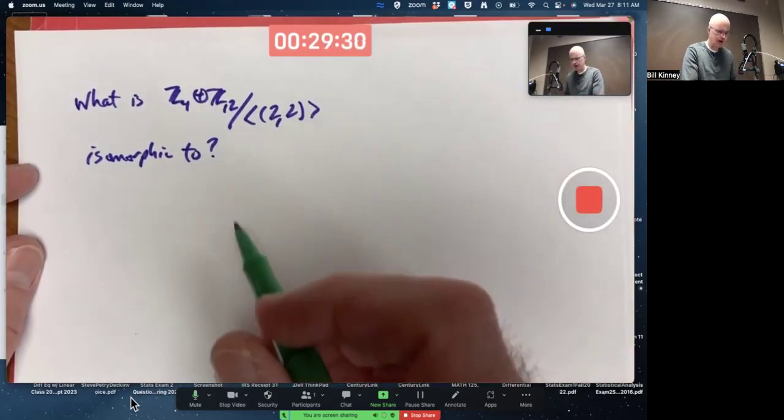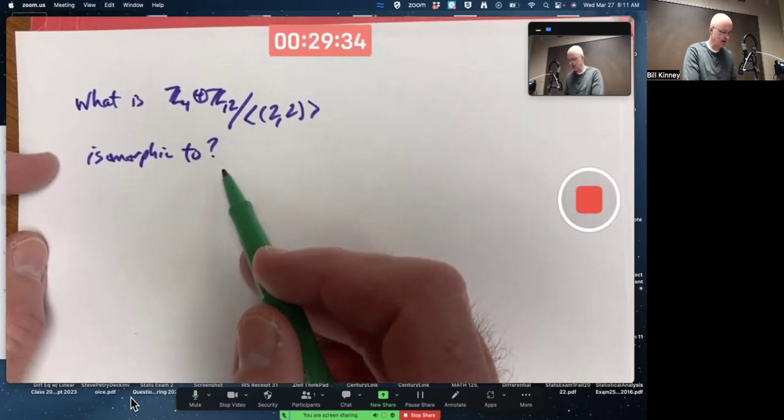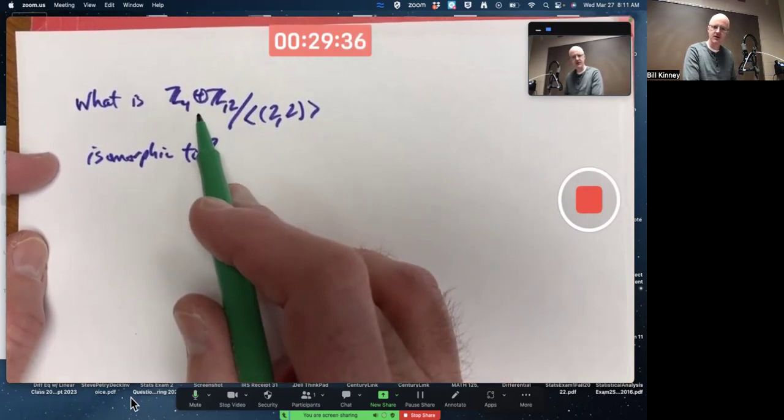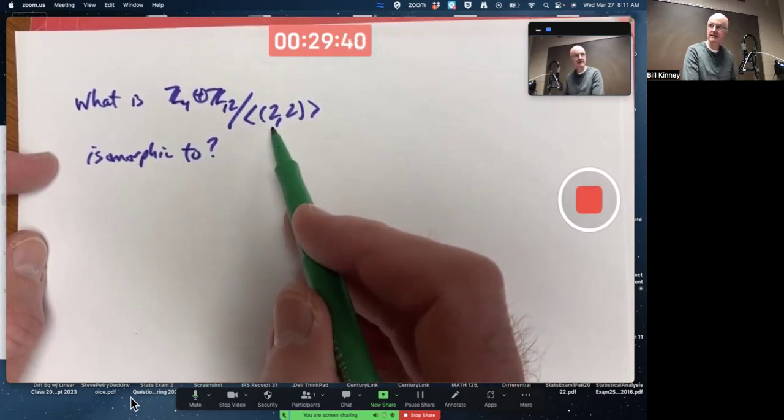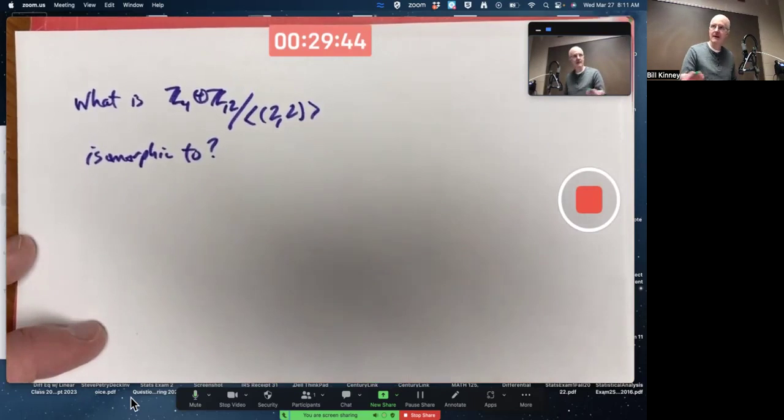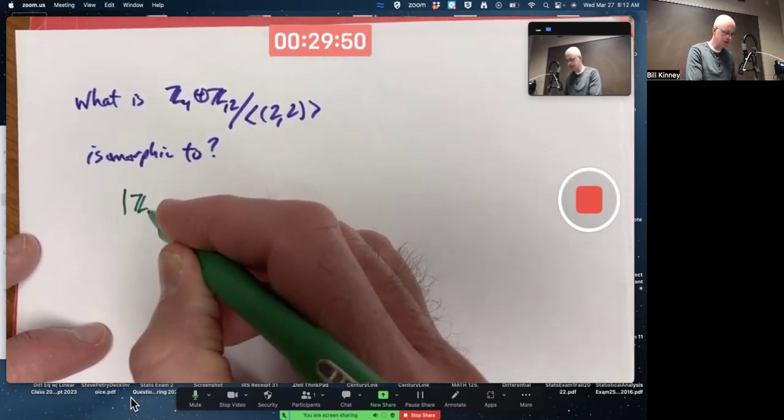In this problem, we're trying to figure out what this factor group is isomorphic to. That's the external direct product of Z4 with Z12, modded by the cyclic subgroup generated by (2,2). Might not be a bad idea as you start the problem-solving process of thinking about how big these individual groups are.